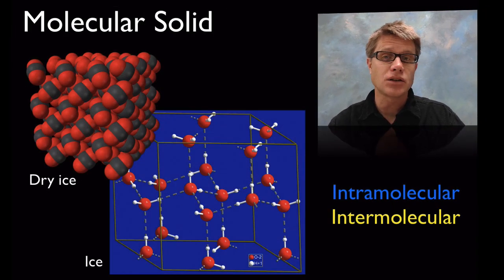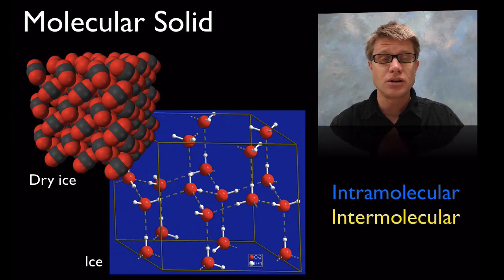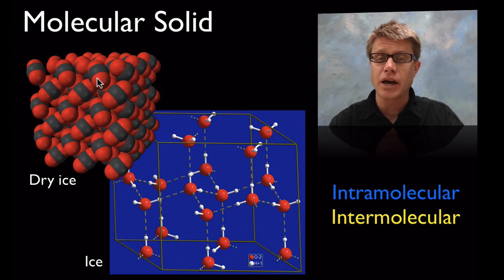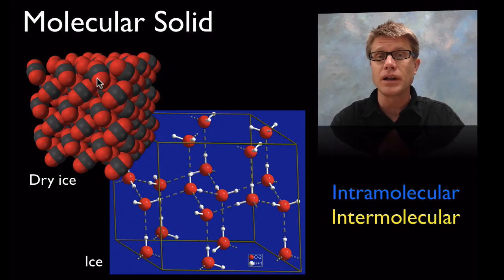A molecular solid could be dry ice or just ice. If we look at dry ice, which is solid carbon dioxide, it has one carbon and two oxygen atoms covalently bonded together. It has very intense, strong intramolecular bonds holding it together.